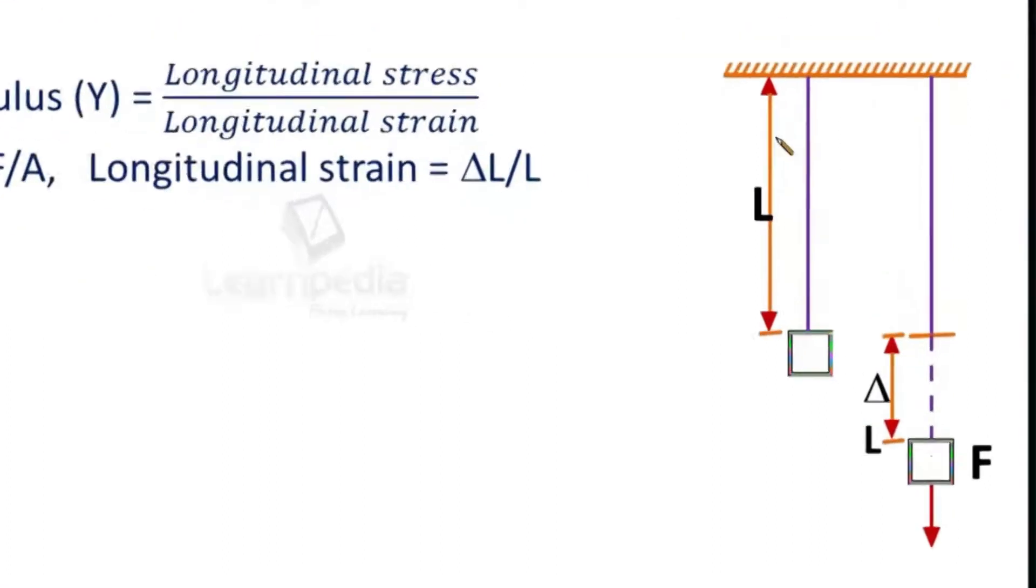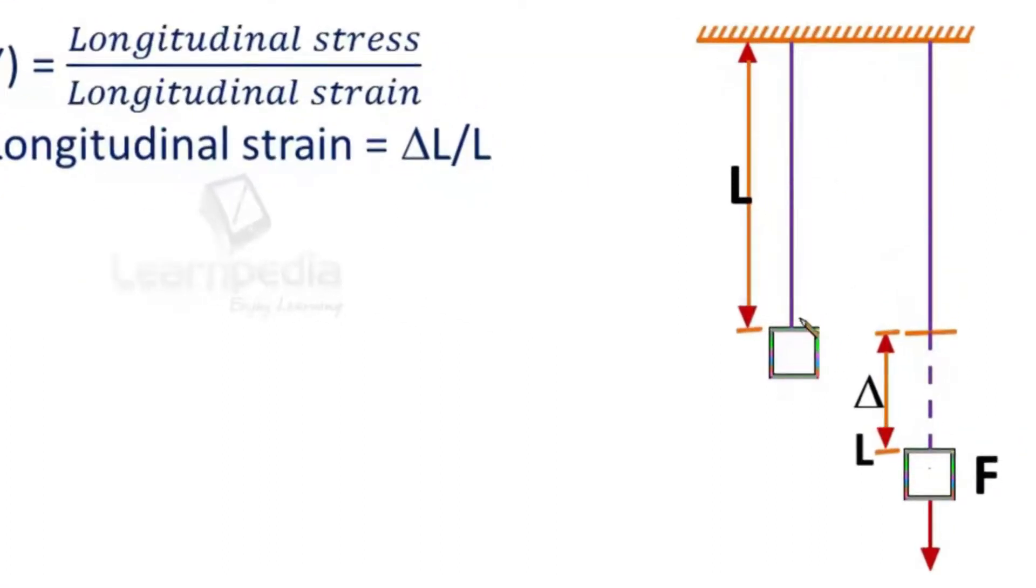For example, here we have a wire of length L and there is a block of mass M, or any mass—we are not going to use this basically.